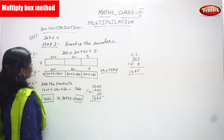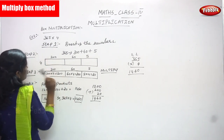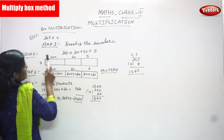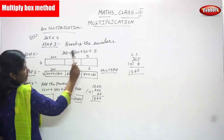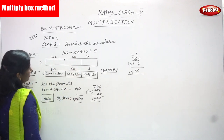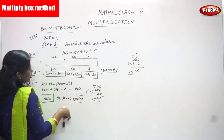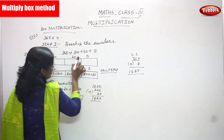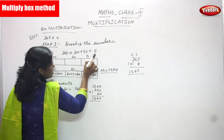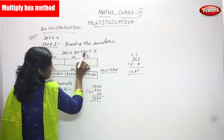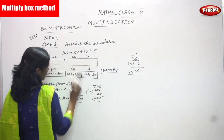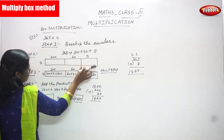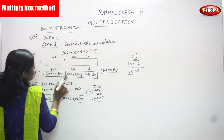The problem is 365 into 4. Step one: first we have to break up the numbers. So 365 — how are we going to split it? 300 plus 60 plus 5. This is the ones, this is the tens, and this is the hundreds.